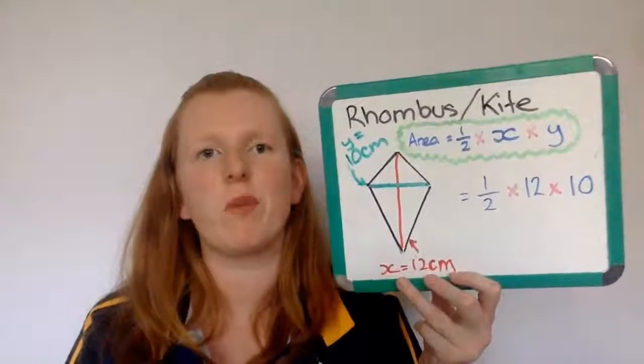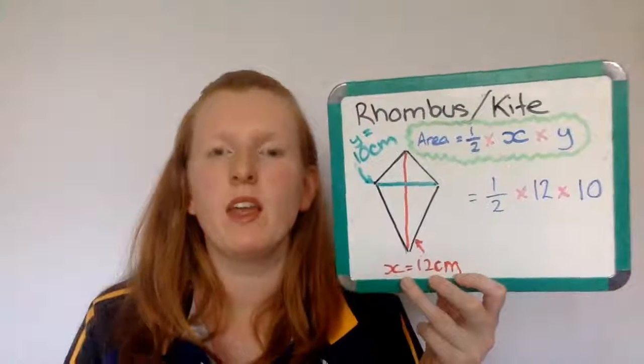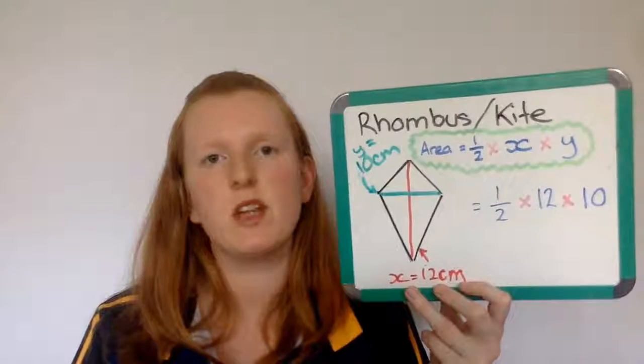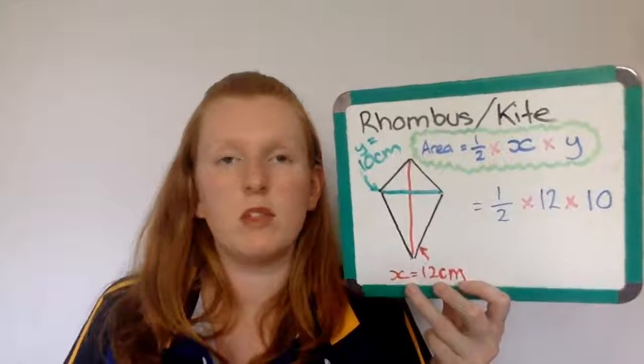Now let's talk about how we find the area of a rhombus, sometimes called a kite. The formula for this particular shape is area equals half times x times y. Now what is x and what is y?